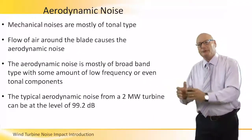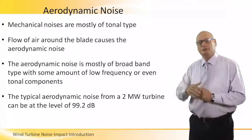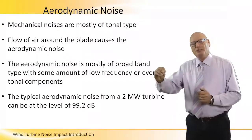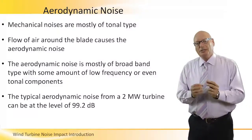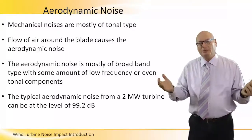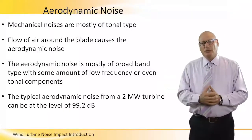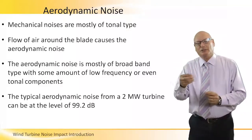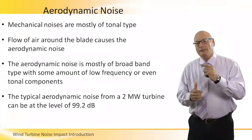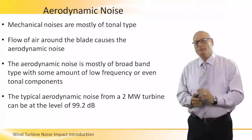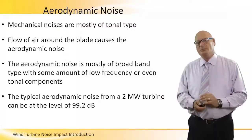Aerodynamic noise is a different family of noises. The mechanical noises are mostly of tonal type, whereas the flow of air around the blade causes aerodynamic noise. The aerodynamic noise is mostly of broadband type, with some amount of low frequency or even tonal components. A typical aerodynamic noise from a 2 megawatt turbine can be at the level of 99.2 decibels — that's very high, and you have to add it to the mechanical noise. The two noises act at the same time: 97 decibels from mechanics and 99 decibels from aerodynamics.